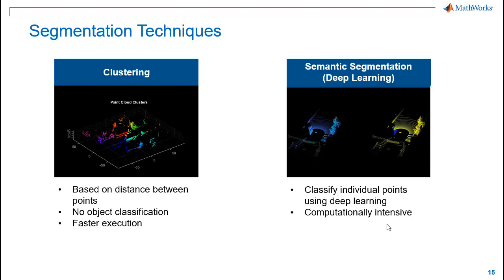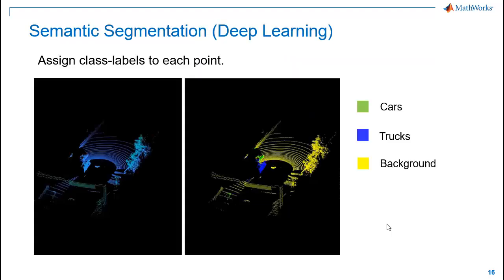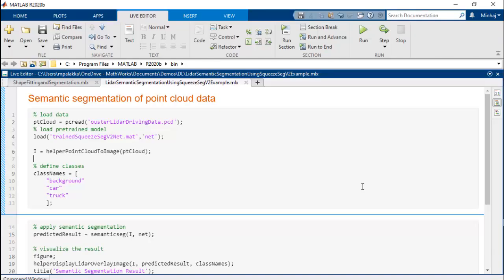The second technique is to use deep learning models. The neural networks here assign class labels to each point in the point cloud. We can apply state-of-the-art networks like PointSeg and SqueezeSegV2 on the raw point cloud data. It segments the point cloud into three classes: cars, trucks, and background. Let's look at the code for this.